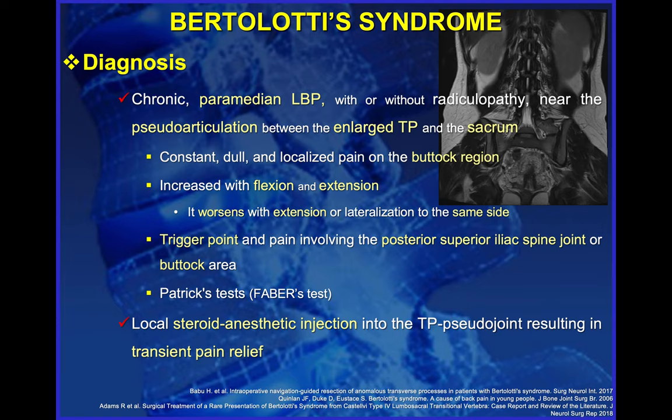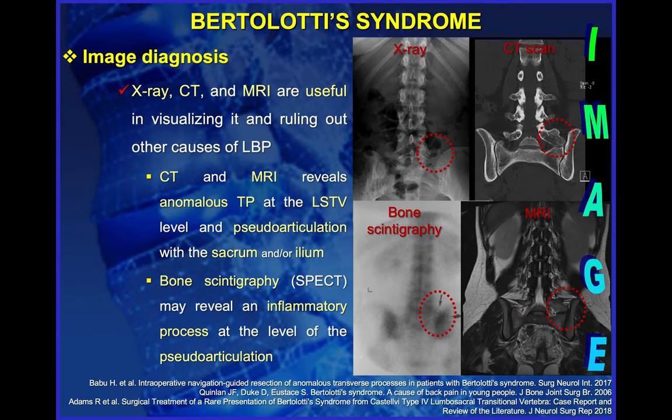The clinical symptoms are typical chronic lower back pain at the paramedian region, associated with the enlarged transverse process and quite often a pseudo-articulation. It also has a typical trigger point, and this kind of pain is usually alleviated with local injection of steroids and anesthetics. It can be identified by different imaging modalities: X-ray, CT scan, and MRI.